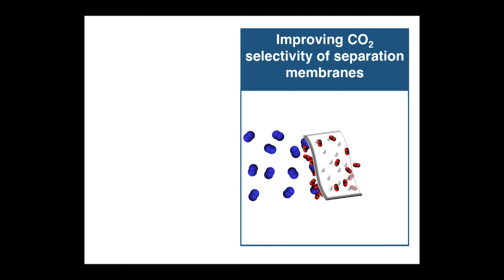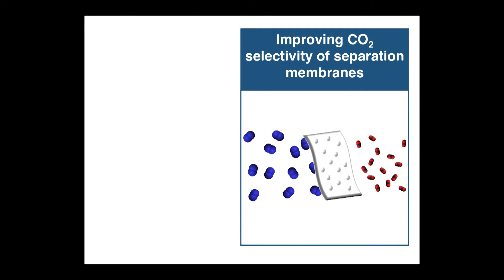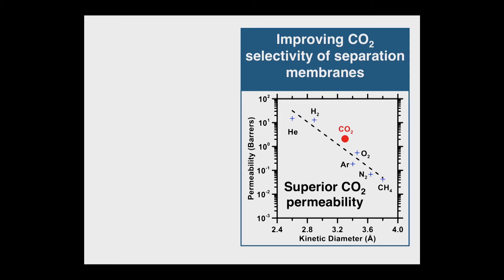These membranes act as molecular sieves by separating CO2 and allowing it to pass, while preventing larger oxygen and nitrogen molecules from passing through. By tuning the chemical composition of these membranes, we can achieve superior CO2 permeability and improved CO2 selectivity, which is the ratio between permeability of CO2 and other gas species.